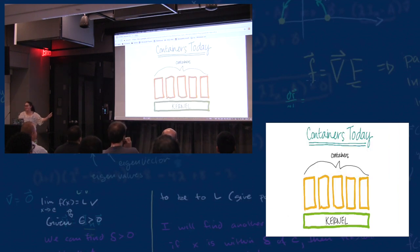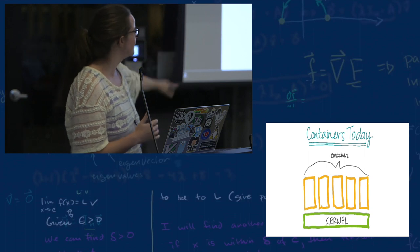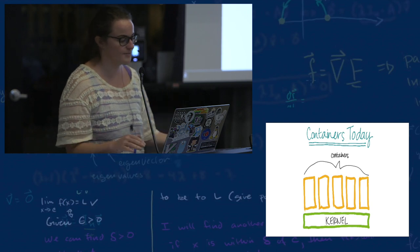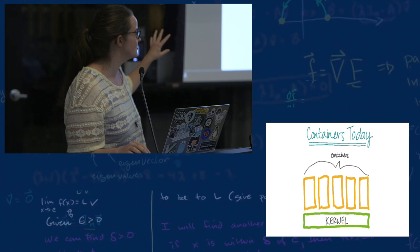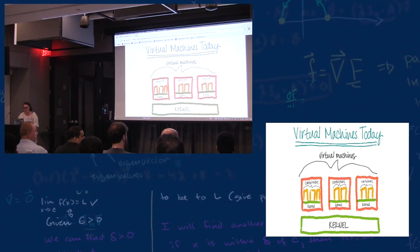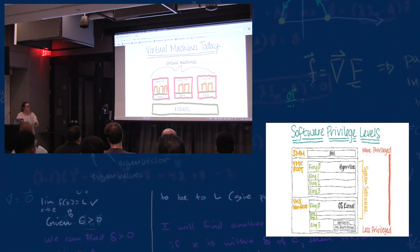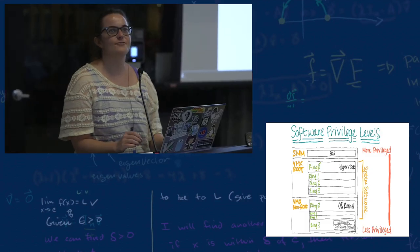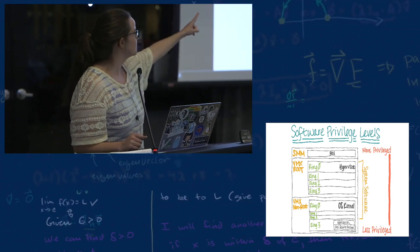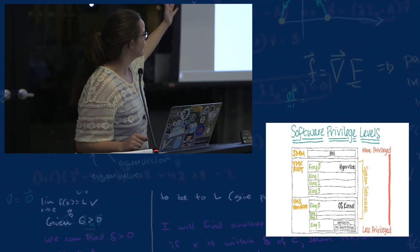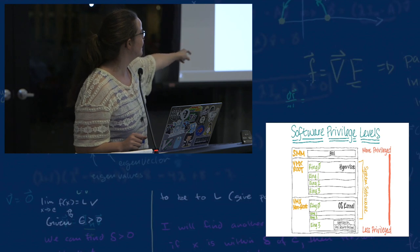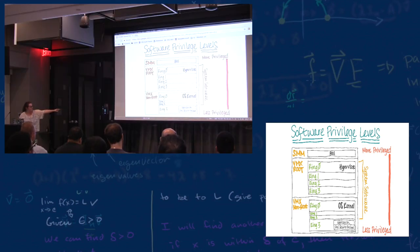The way that containers work today, if you aren't familiar, is they all share a kernel. The attack surface is the kernel itself, and containers use Linux namespaces and C groups to do isolation, and you can use LSMs on top to secure them. You can kind of get an idea of how this is all laid out.